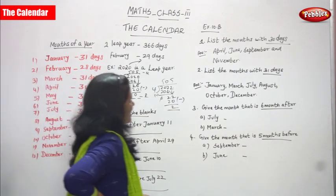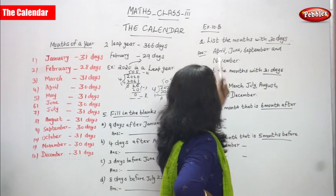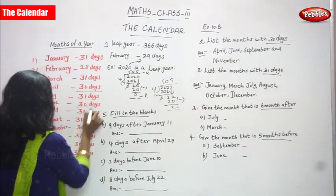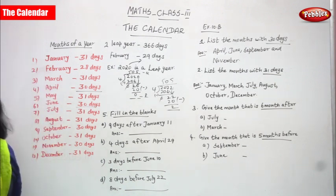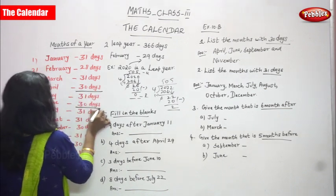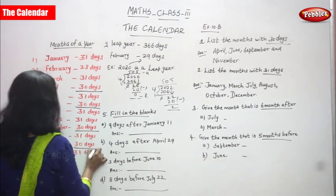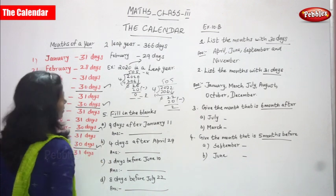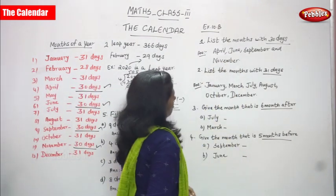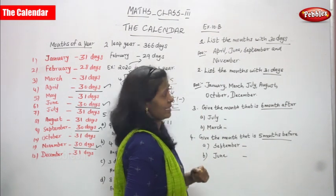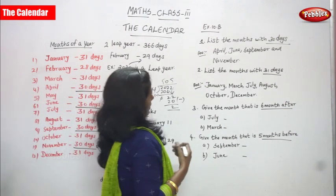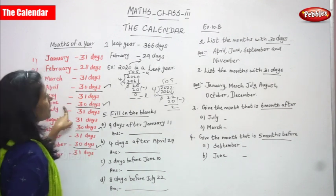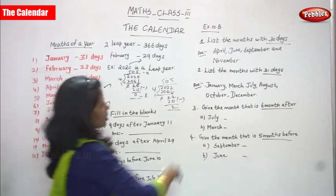Now we move on to Exercise 10B. First question: list the months with 30 days. The months that have 30 days are April, June, September, and November. So these four months each have 30 days. April, June, September, and November — that is the answer.